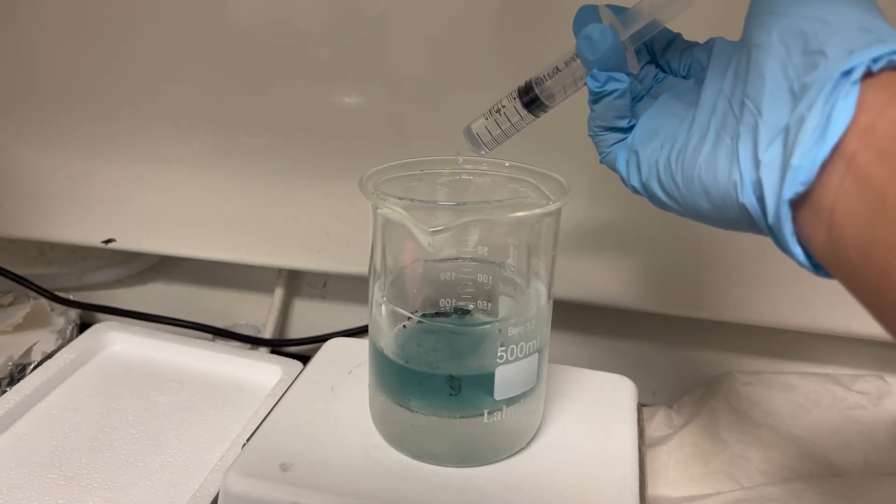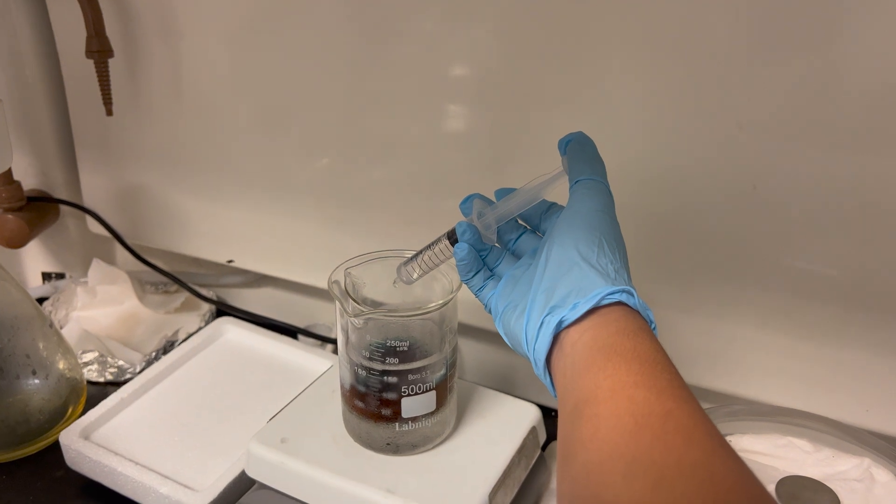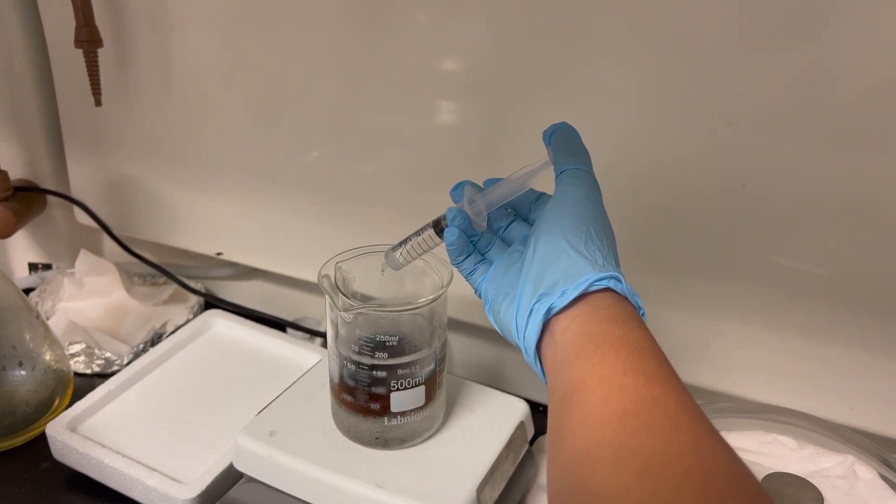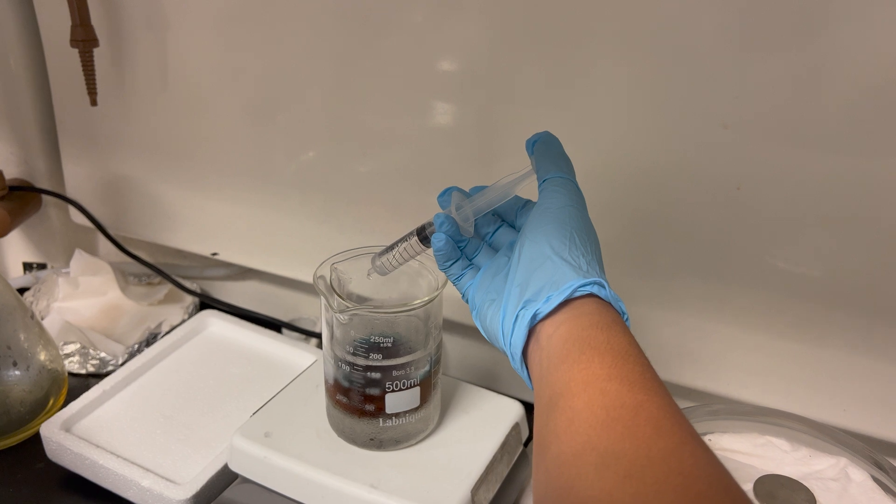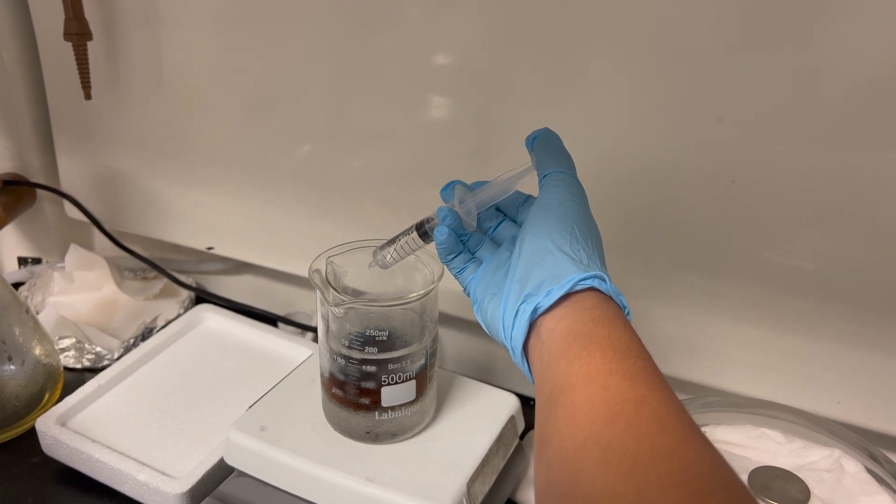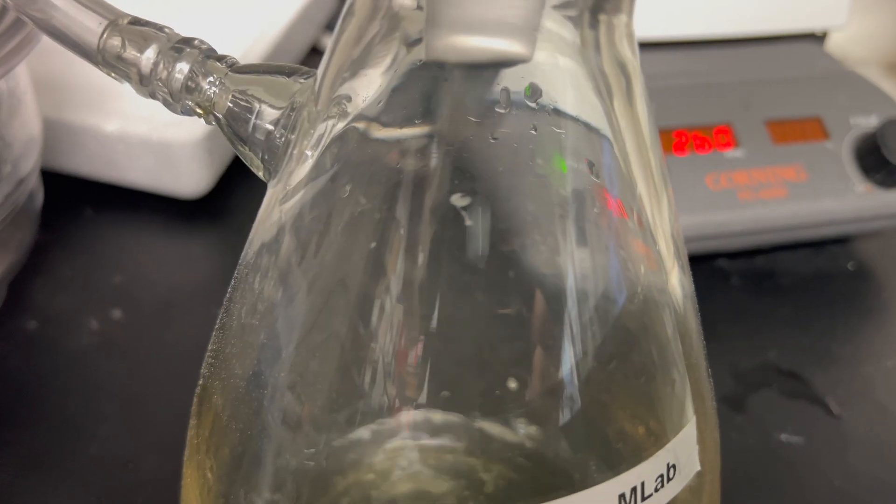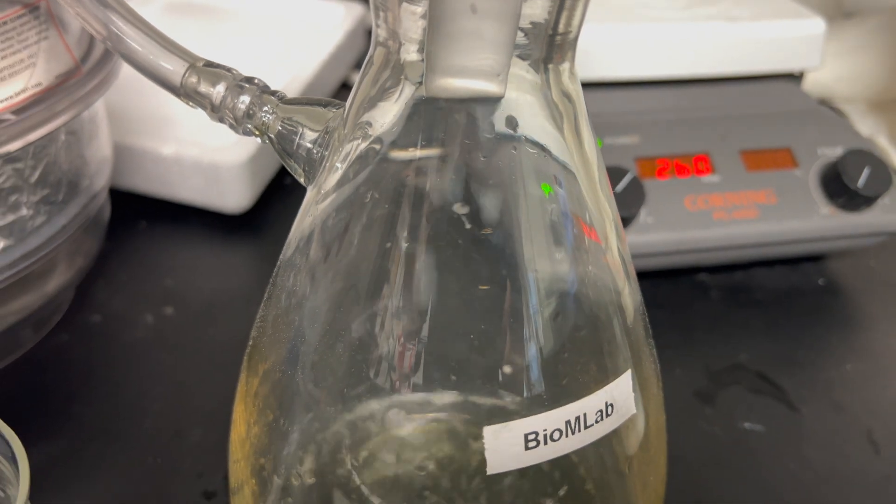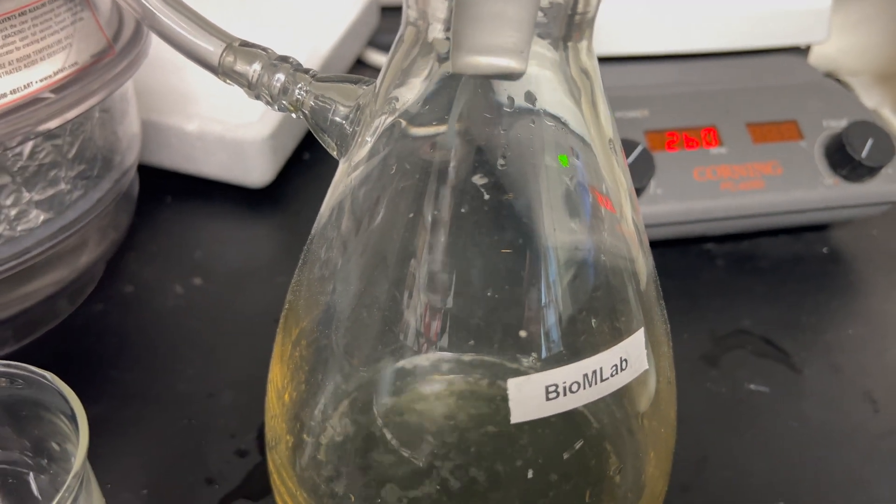Once one hour is done, you can see a drastic change in color. Then we proceed with vacuum filtering the solution. This would also take another hour. Once that is done, we will collect the elastic bands coated with polyaniline.